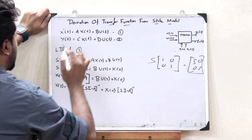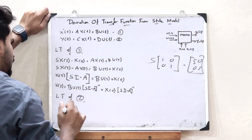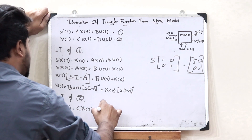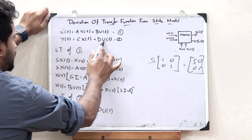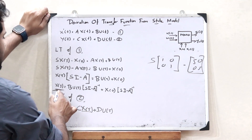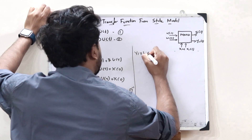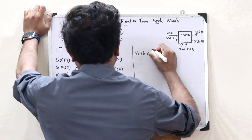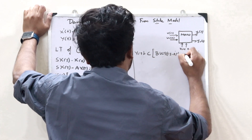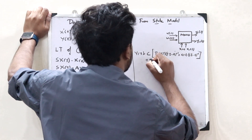Now we have to find the transfer function. Let us take the Laplace transform of equation number 2. Upon taking the Laplace transform of equation number 2, we get y(s) equals C·X(s) plus D·U(s). This value of X(s) is what we have just derived. Substituting this value of X(s), we get y(s) equals C times [(sI minus A) inverse · B·U(s) plus x(0)·(sI minus A) inverse] plus D·U(s).